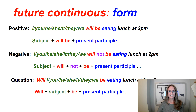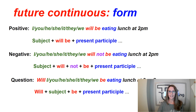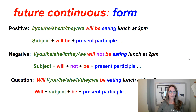Let's look at the form. For a positive sentence, it's subject — whether it's I, you, he, she, it, they, or we — plus will, plus be, plus the present participle.